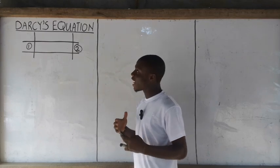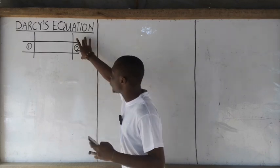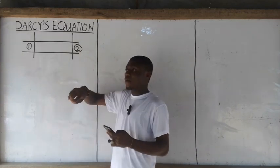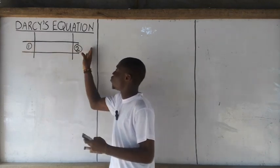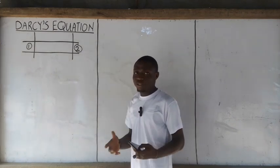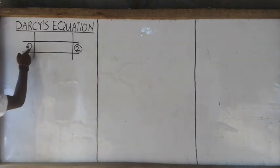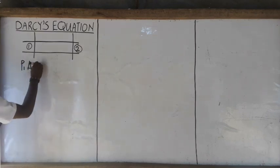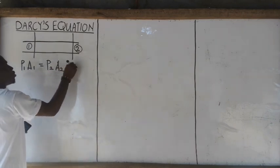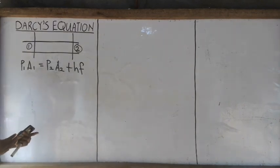For a pipe, a pipe ought to have a hole — the outer hole and the inner hole. That hole represents the area. The rate at which water passes through the pipe, I can call it pressure. So mathematically, pressure at Section 1 times area at Section 1, equals pressure at Section 2 times area at Section 2, plus HF — head loss due to friction.